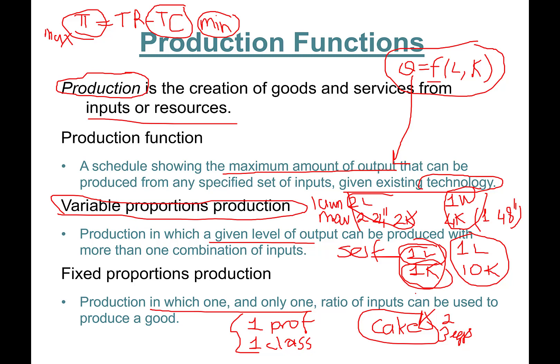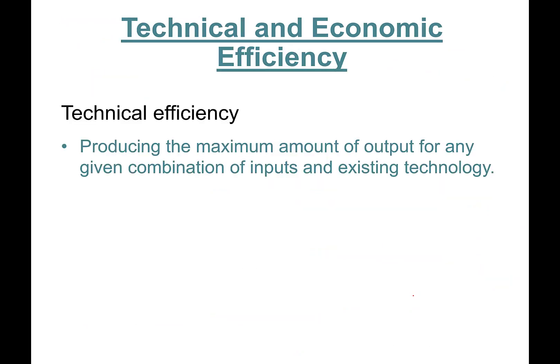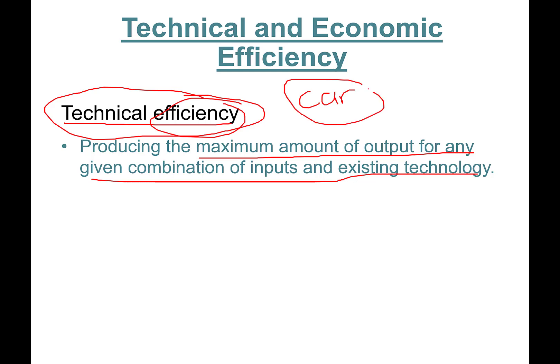Let's learn about technical and economic efficiency. In economics we talk about two types of efficiency. Technical efficiency is producing the maximum amount of output for any given combination of inputs and existing technology. This is very similar to when we talk about efficiency in civilian life. An efficient car goes 50 miles per gallon given combination of inputs.